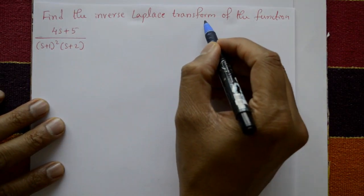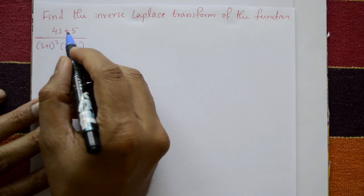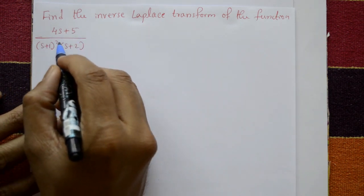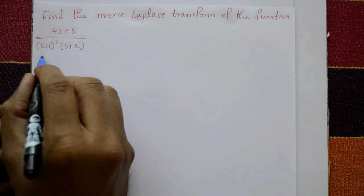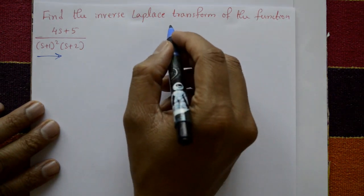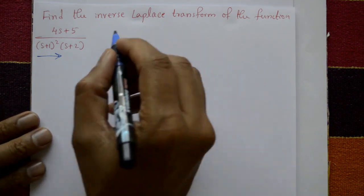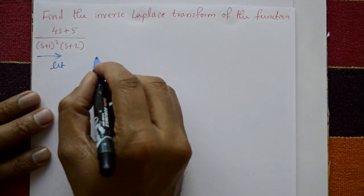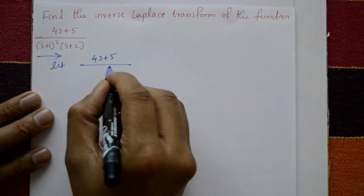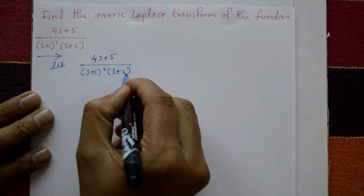Find the inverse Laplace transform of the function: (4s + 5) divided by (s + 1) whole square into (s + 2). Now in this problem we will use the partial fraction method. The given function is (4s + 5) divided by (s + 1) whole square into (s + 2).